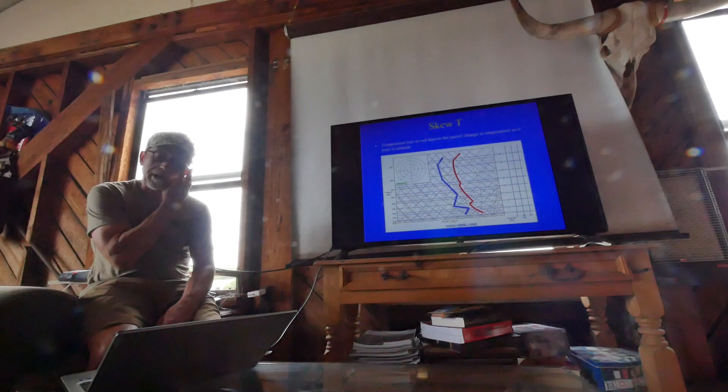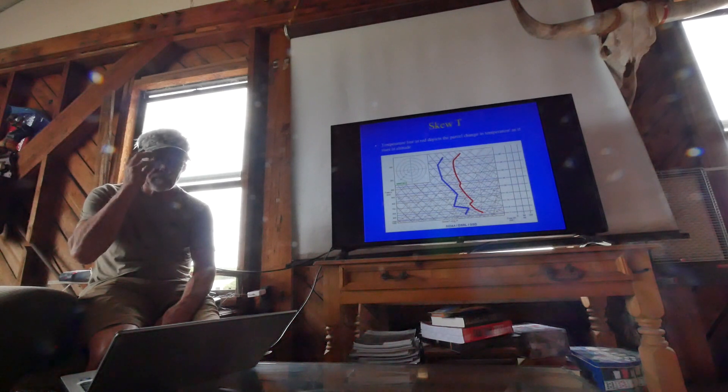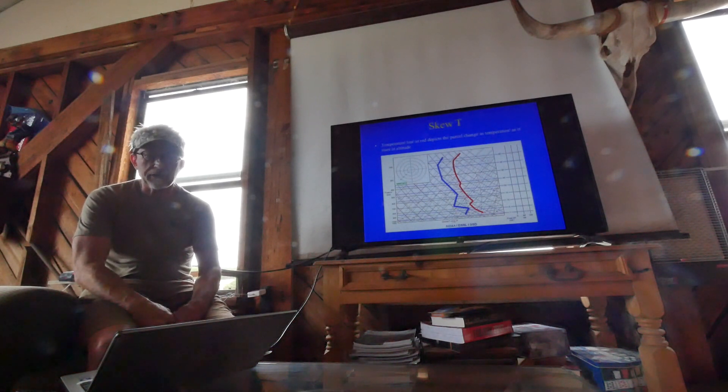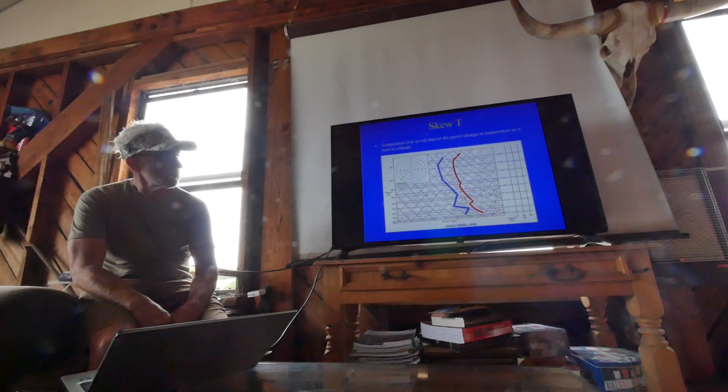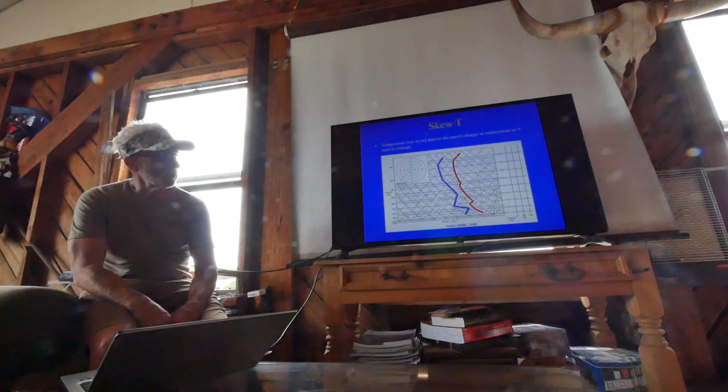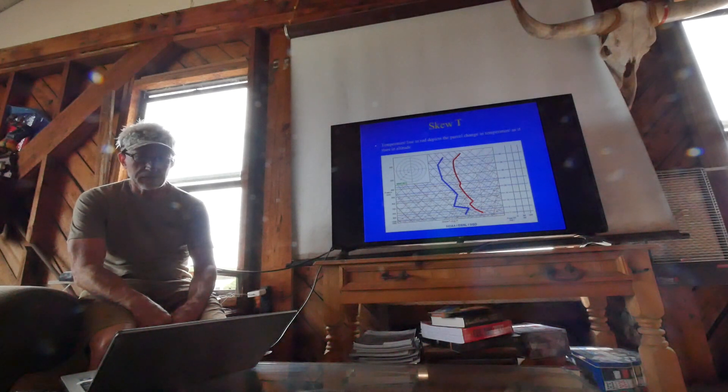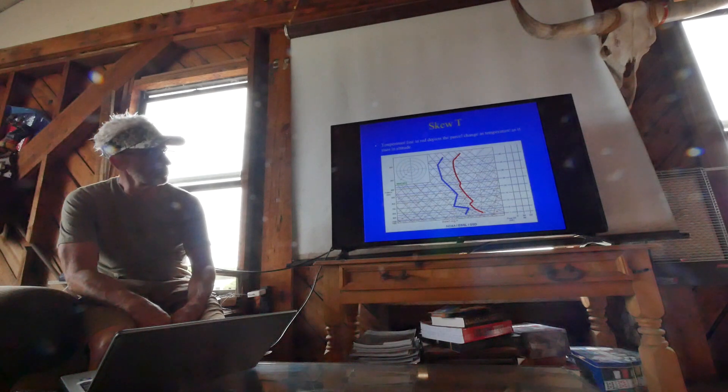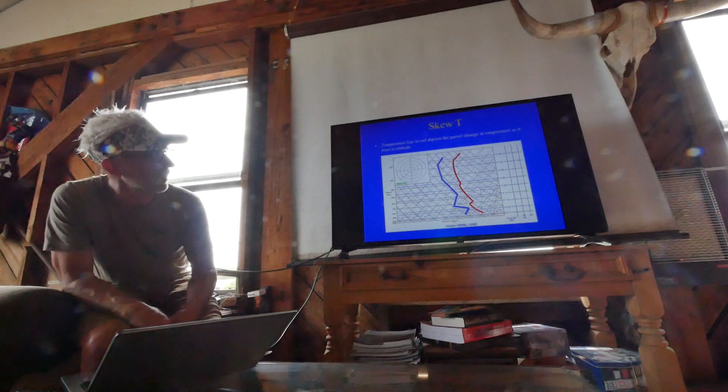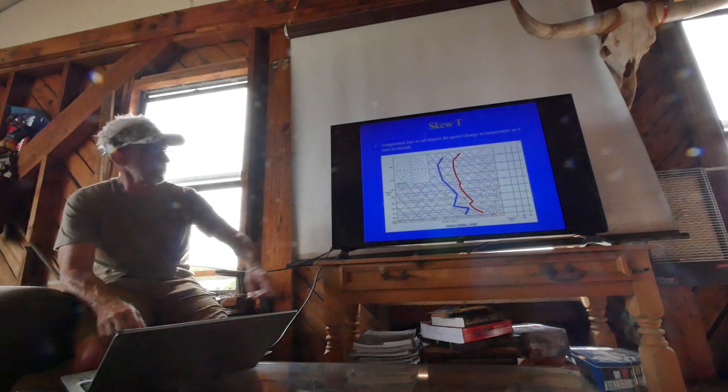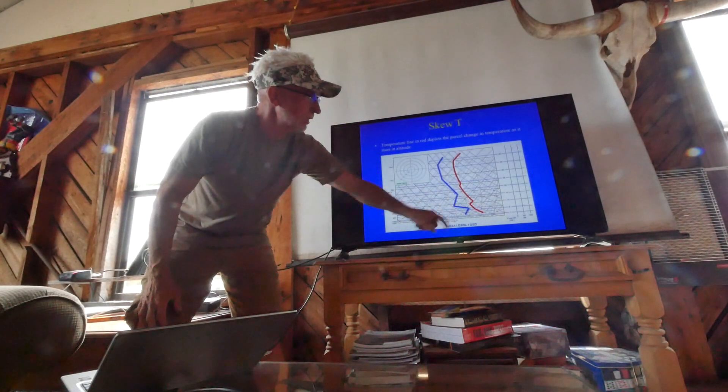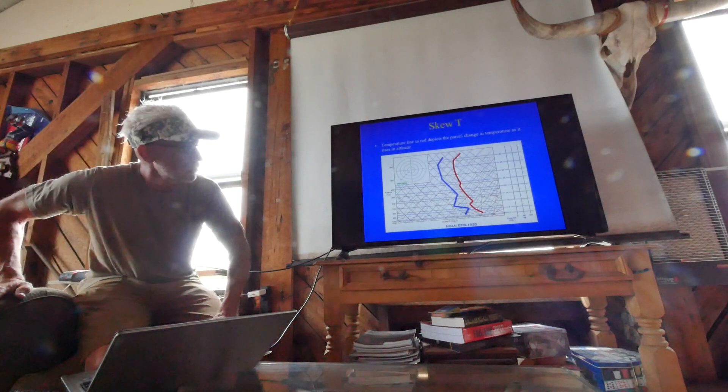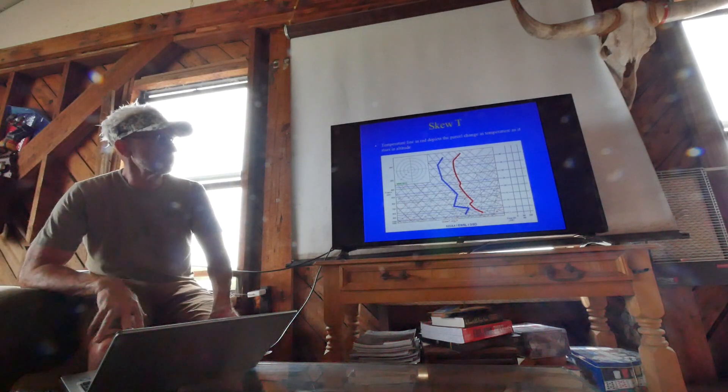Those were the fixed parameters. Now the temperature line in red depicts the parcel change in temperature as it rises in altitude. You can see on this particular day, this parcel cools adiabatically up to about 8,000 feet, right here. Then there's an inversion where the temperature rate of change decreases significantly.